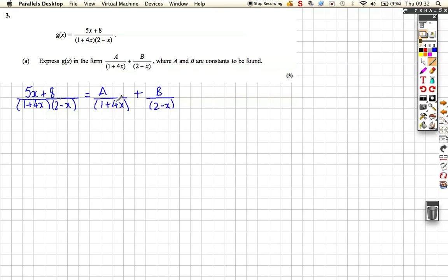So, if we multiply both sides by the double factor on the bottom here, if we multiply by this double bracket (1 plus 4x)(2 minus x), the (1 plus 4x) will cancel with this one, leaving us with, on the left-hand side, 5x plus 8, and on the right-hand side, we'll leave it with A(2 minus x). This will be the only one that's left, this will cancel with this. Similarly, the (2 minus x) bracket will cancel with this one, so you're just left with B(1 plus 4x).